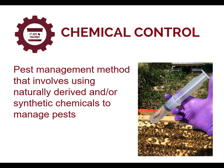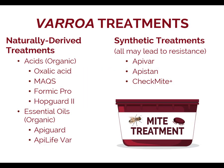A chemical control is a pest management method that involves using naturally derived and or synthetic chemicals to manage pests. In northern climates, it is difficult to keep bees alive without relying on chemical controls for Varroa. Chemical controls may be naturally or synthetically derived. Right now, naturally derived treatments include oxalic acid, MitoWay quick strips, Formic Pro, HopGuard 2, Apigard, and Apilifar. Synthetically derived treatments include Apivar, Apisan, and Checkmite Plus.